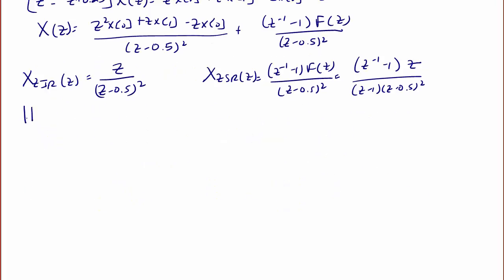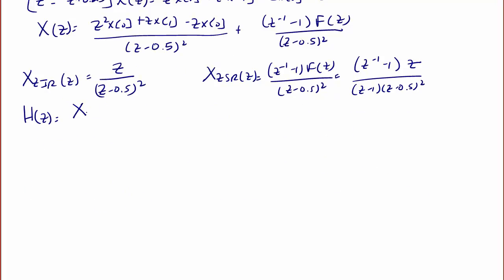The transfer function H(z) equals X_ZSR(z) / F(z), which equals (z⁻¹ - 1) / (z - 0.5)², which can also be written as (1 - z) / [z(z - 0.5)²].